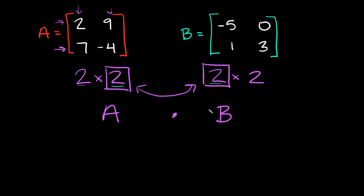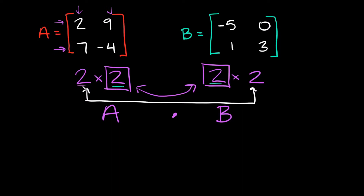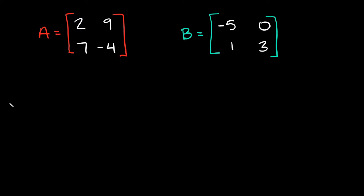The other thing we can get from writing this out like this — these two numbers at the very end — that tells you how big your matrix is going to be for your answer. So for our answer, we're going to have a two by two. Now if we're going to multiply matrix A and B together, again we know it's going to be a two by two.